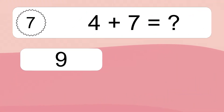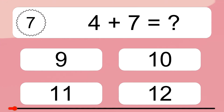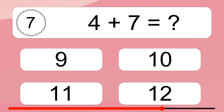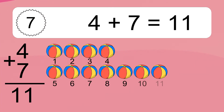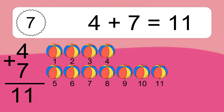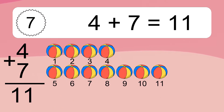4 plus 7 equals what? 4 plus 7 equals 11. Let's count it. 1, 2, 3, 4, 5, 6, 7, 8, 9, 10, 11.